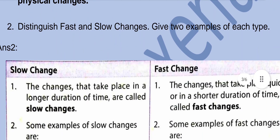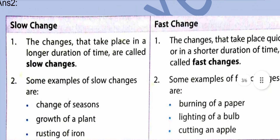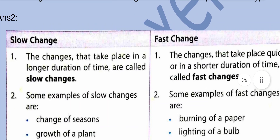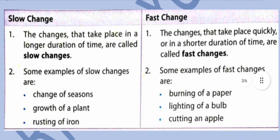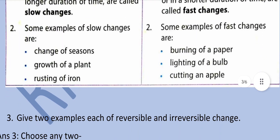Distinguish between fast and slow changes. Give two examples of each type. Slow change: the changes that take place over a longer duration of time are called slow changes. Some examples are change of seasons, growth of a plant, and rusting of iron. Fast change: the changes that take place quickly or in a shorter duration of time are called fast changes. Examples are burning of paper, lighting of a bulb, and cutting an apple.